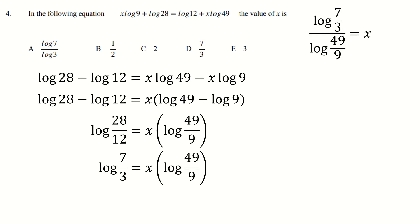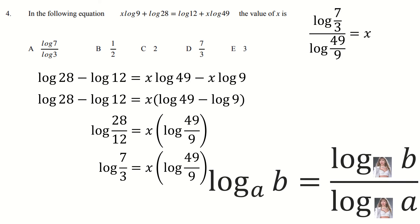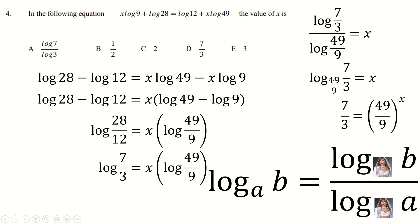This is not the easiest way to do this question, but I obviously wanted to get out more pictures of Taylor Swift. So we're going to use the Taylor Swift log law yet again, but this time we're going to use it backwards to say that log of this over log of this is going to be a single log of base this to this. And now we can say: 49 over 9 to the power what equals 7 thirds? Clearly a half, and x will be a half, and that will be our question done.